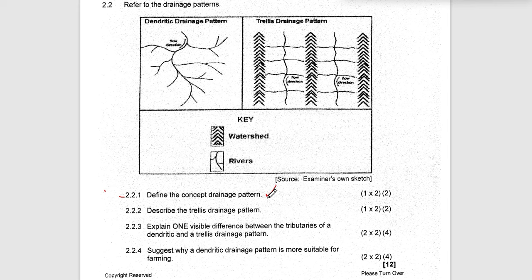Question 2.2.2 says: describe the trellis drainage pattern. You have to give the attributes and characteristics of this trellis drainage pattern. You can clearly see that this is the mainstream on this drainage basin, and there is another mainstream on the second drainage basin. Our two mainstreams are parallel — that is the very first characteristic of the trellis drainage pattern.